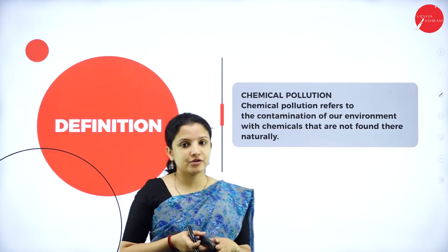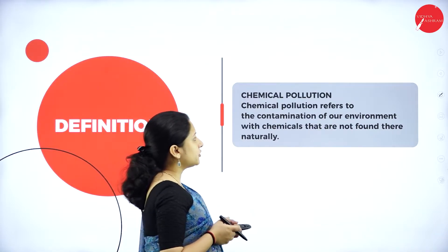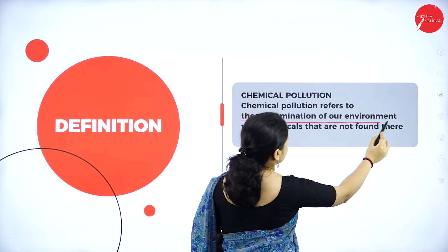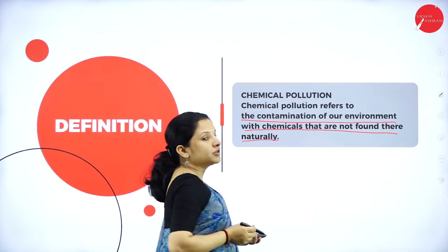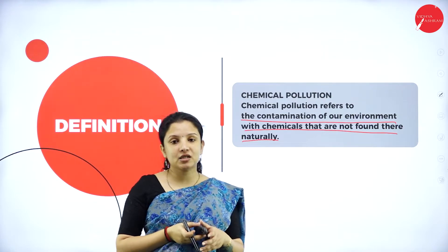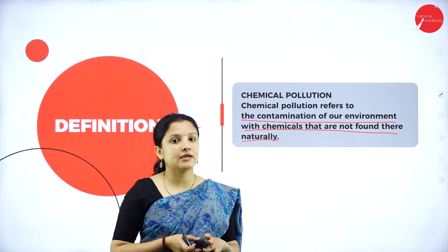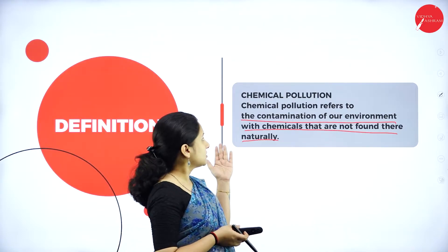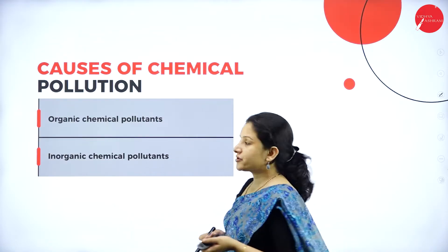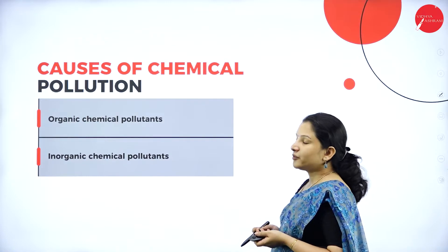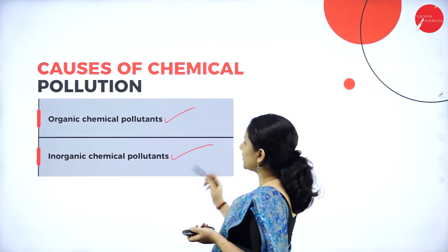Next, moving on to chemical pollution. Chemical pollution refers to the contamination of our environment with chemicals that are not found there naturally. Any chemical that enters the environment, polluting it, altering it, or contaminating it, is called chemical pollution. The causes of chemical pollution can be mainly categorized as organic chemical pollutants and inorganic chemical pollutants.